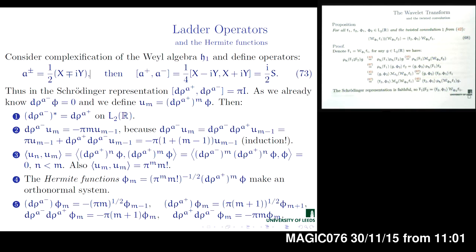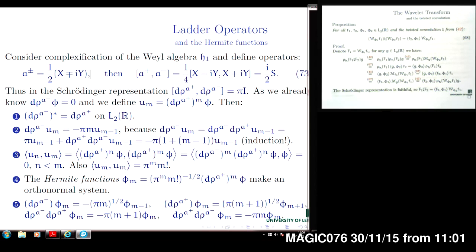We know the solution of this equation: the function will be the Gaussian φ. We then consider further functions generated by the application of powers of A-plus to the Gaussian, and observe the properties of these operators we have just introduced.